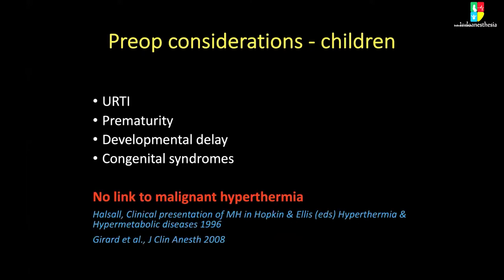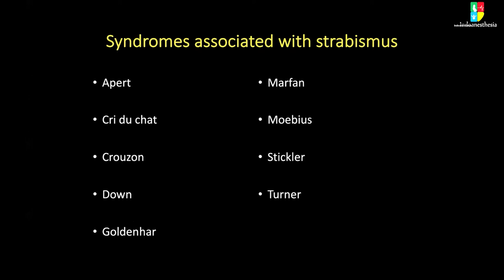In addition to routine pre-op considerations in children, pay particular attention to upper respiratory tract infection, prematurity, developmental delays, and congenital syndromes. Strabismus was once thought to be linked to malignant hyperthermia, but this is no longer considered to be the case. There are many syndromes associated with strabismus — for any of these, pay particular attention to cardiac and airway abnormalities.